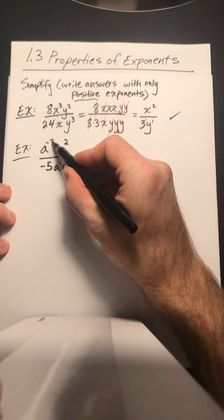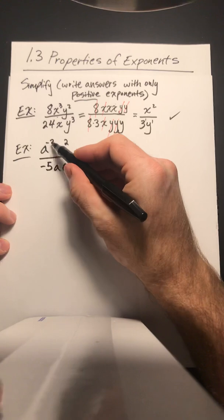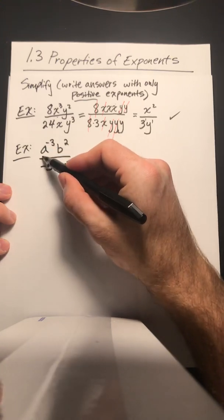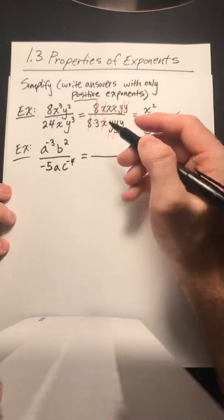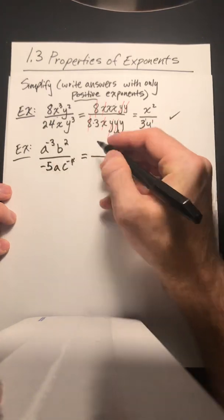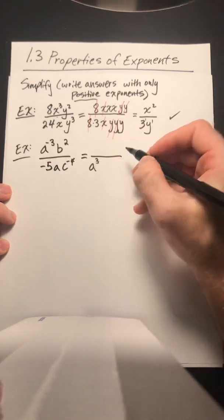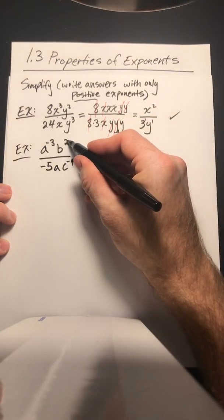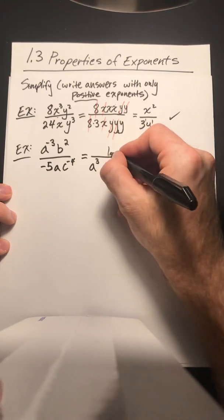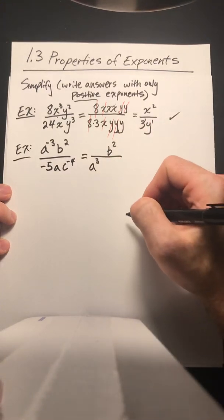Alright, now a to the negative 3, that's a problem. So how do we get rid of that negative 3? We'll have to do the reciprocal. So what does that do? It flips it from the numerator to the denominator. So the a to the negative 3 becomes a cubed in the denominator. Now the b squared, b squared 2 is positive, so that's going to stay up top. We're going to leave it there. Don't mess with it.